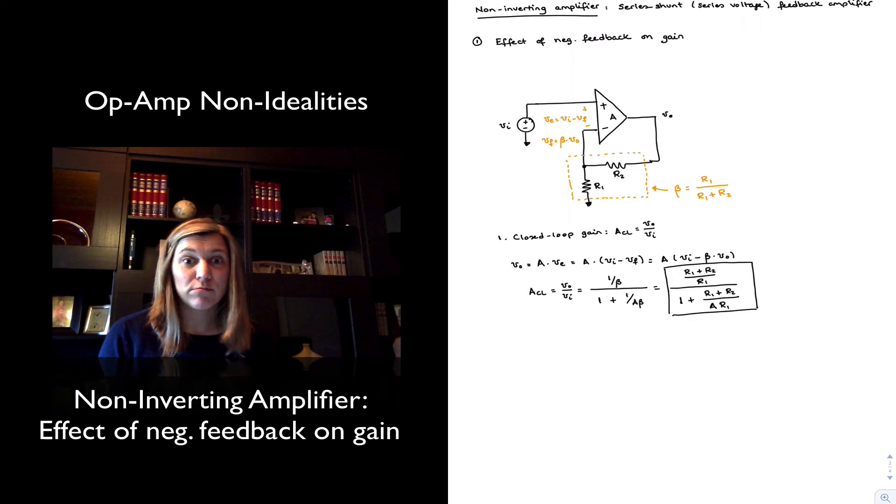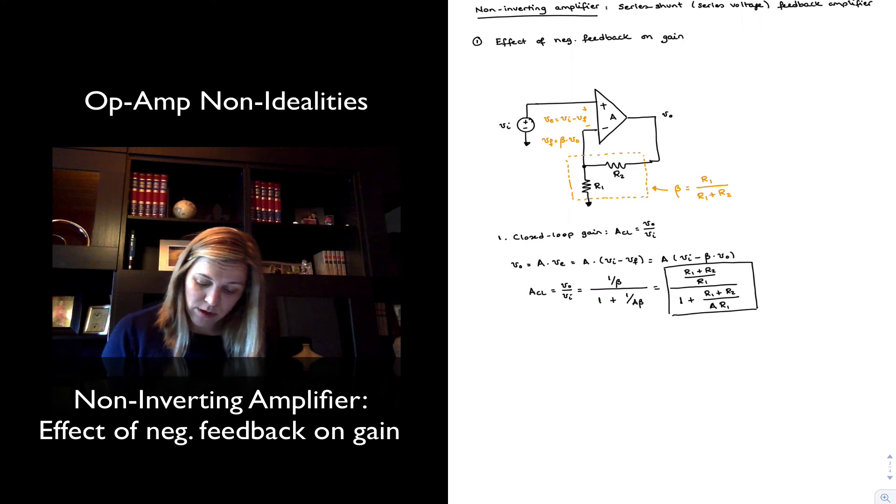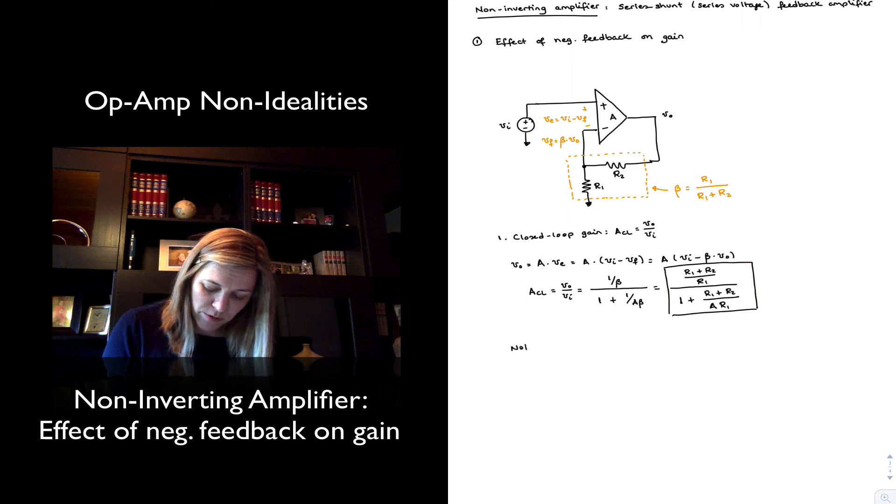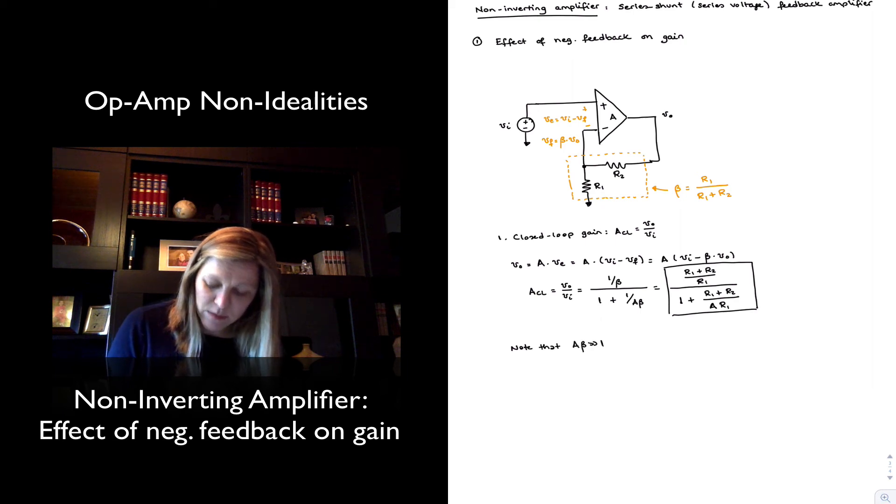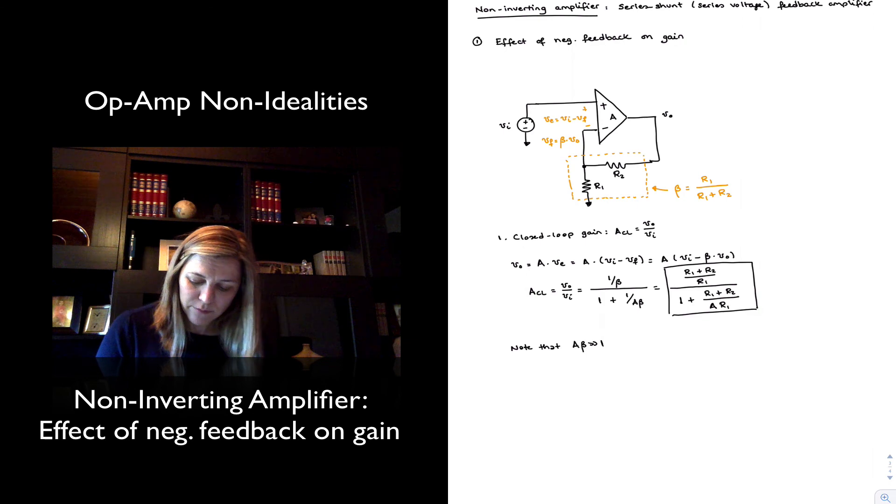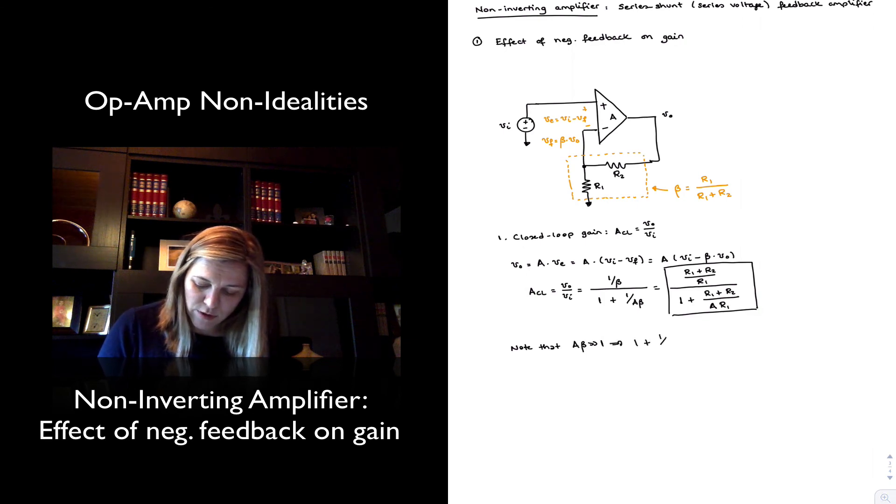Now, you may say, well, that's not the expression I'm familiar with. And that's true. As we previously said, we must note that when A times beta is much larger than 1, then 1 plus 1 over A times beta can be approximated as being equal to 1. Therefore, the closed loop gain can be approximated as 1 over beta.